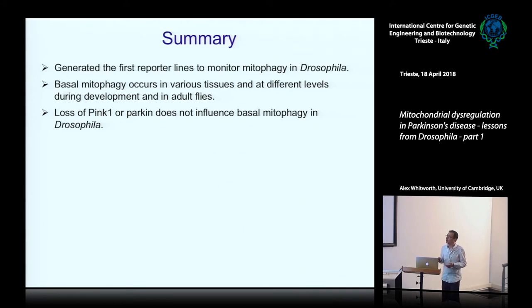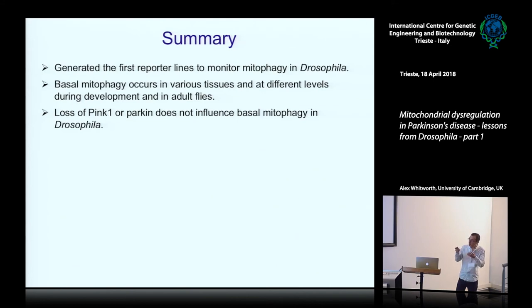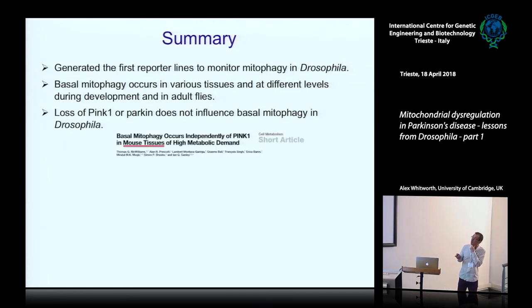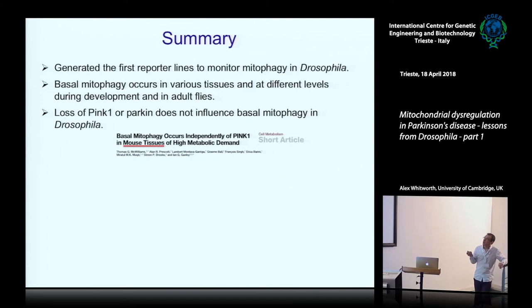We switched to look in a system where we knew PINK1 and Parkin have a profound effect: the flight muscle, an incredibly energetic tissue extremely abundant in mitochondria. We might expect that if mitophagy is really super important for maintaining a healthy mitochondrial collection in a tissue, we'd see it here - but we couldn't find any evidence of mitophagy in this flight muscle. To summarize: we generated the first reporter lines to monitor mitophagy in flies, happy to share with the rest of the field. We found basal mitophagy occurs in various tissues at different levels, but very surprisingly, our knockout mutants for PINK1 and Parkin had no influence on this - and this is a big surprise. This is reinforced by another paper from Tom Williams and Ian Ganley's group studying the same MitoQC reporter system, who came up with exactly the same outcome: mitophagy was not affected by loss of PINK1 in mouse tissue.